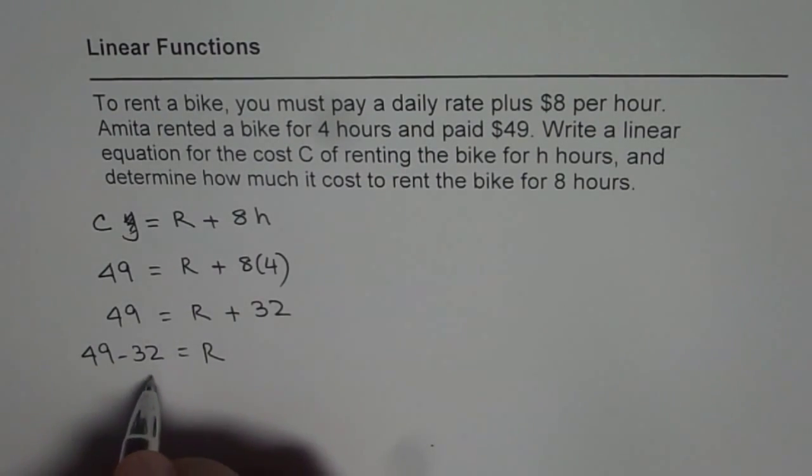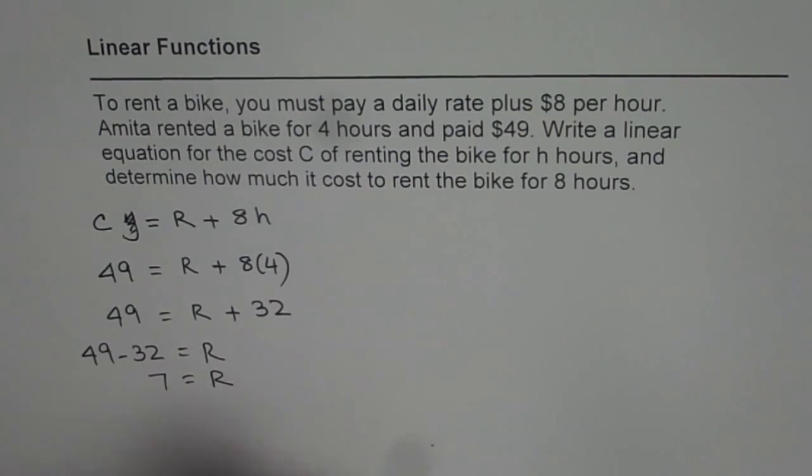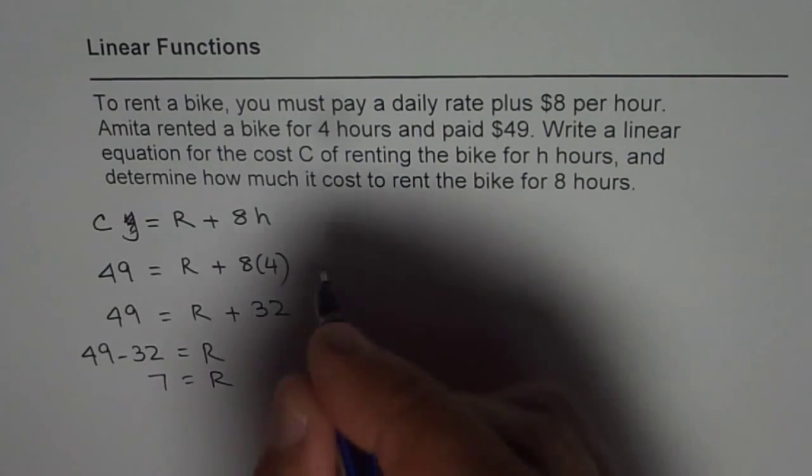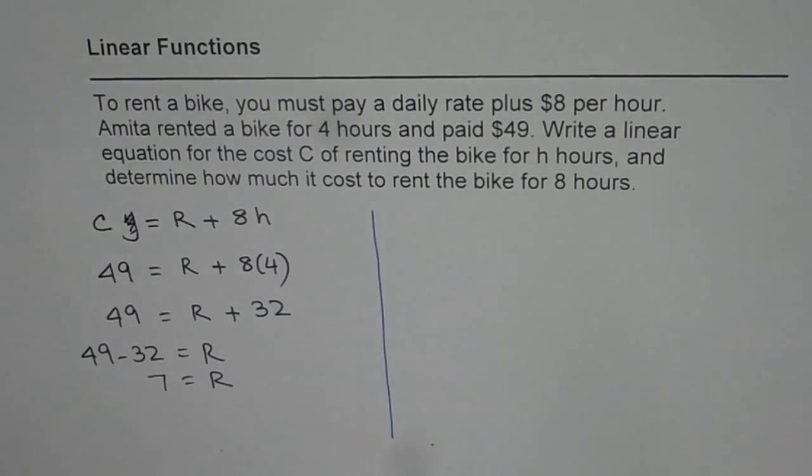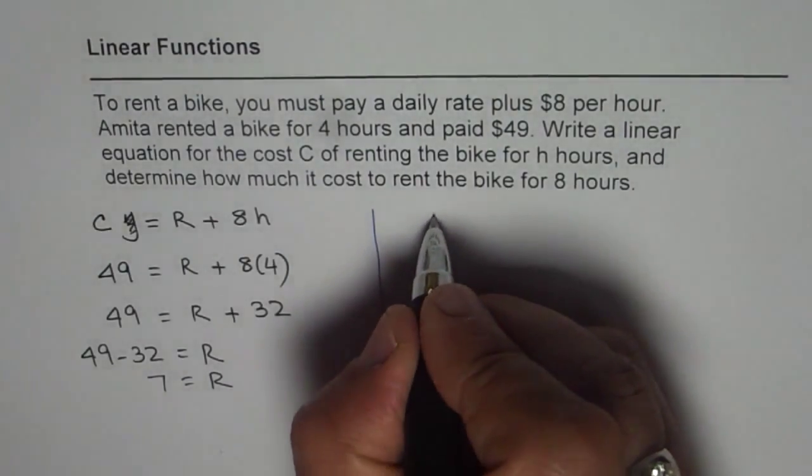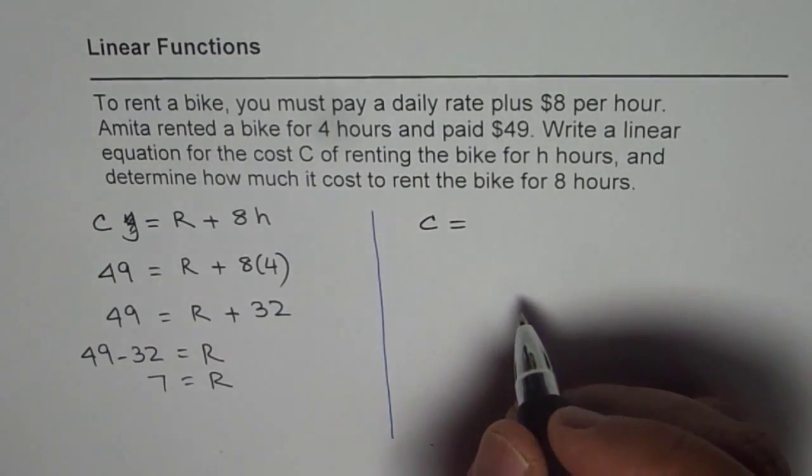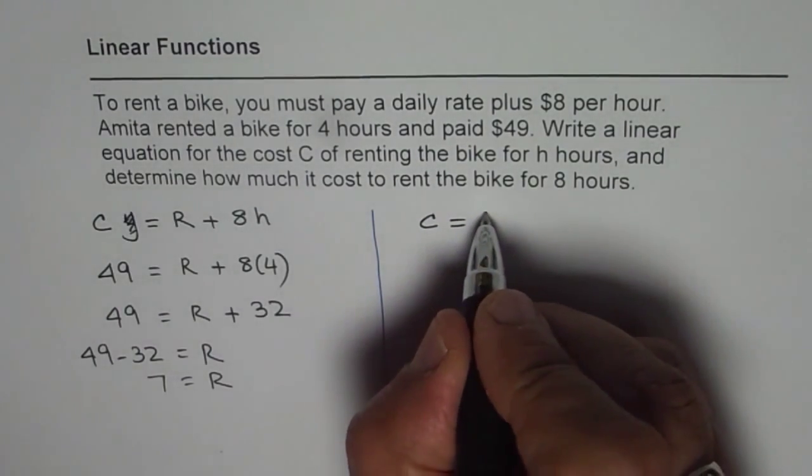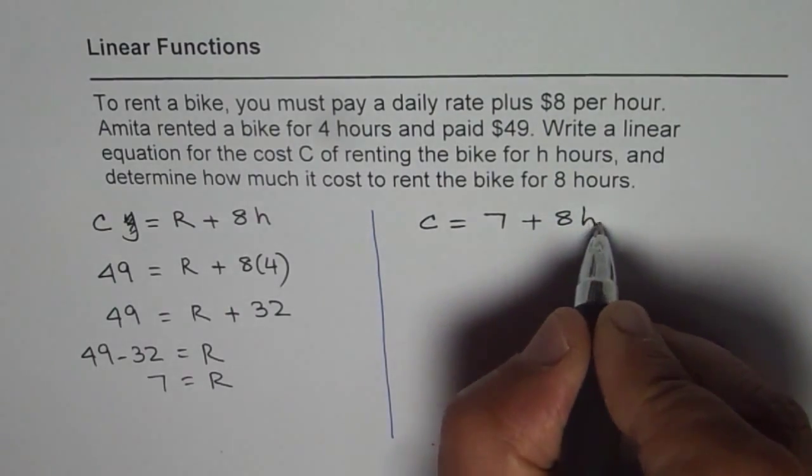So from here we get 7. So daily rate for us or fixed cost for renting the bike is 7 and the variable cost is 8 per hour. Now we can write down our function which is a linear function as C equals to 7 plus 8H.